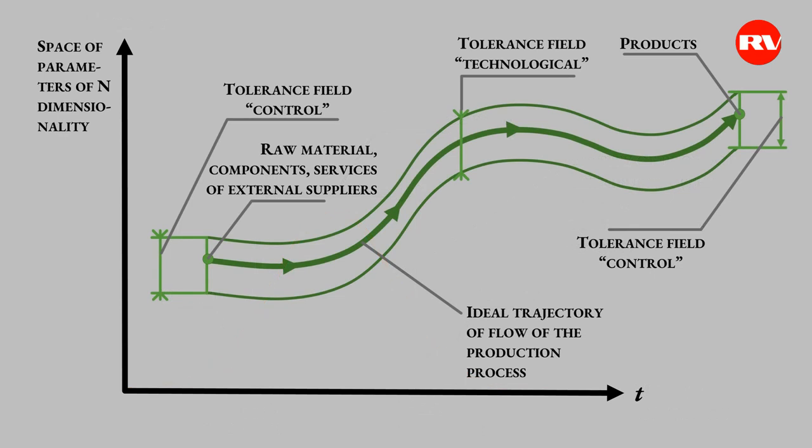Therefore, let's turn to the next scheme. In fact, this is also an abstraction. This is our production process in time. The production process in time is considered as a trajectory in the space of formal parameters with dimension N. The line shows an ideal trajectory of the flow of the production process. The ideal trajectory means that if you take raw materials, components, services of external suppliers — and all these components are of high quality — then if you observe technological discipline, the production process will come to its end, which is indicated by the point 'product.'